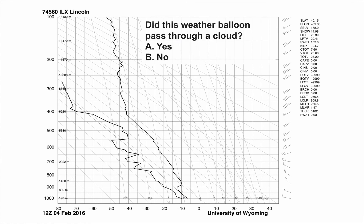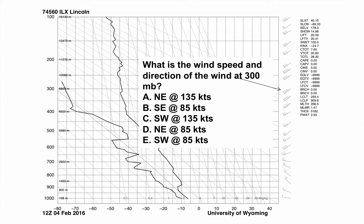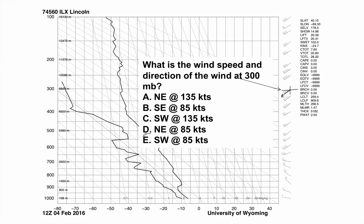Another question: what is the wind speed and direction at 300 millibars? Looking at the wind barb at 300 millibars — one triangle, three long ticks, and a half tick — that's 50, 60, 70, 80, plus a half makes 85 knots. Drawing crosshairs on the pointy end, the wind barb sticks into the southwest quadrant. So the answer is an 85-knot wind from the southwest.